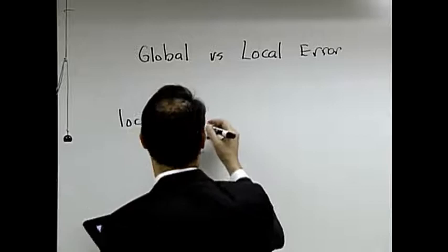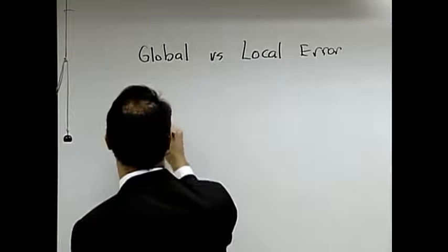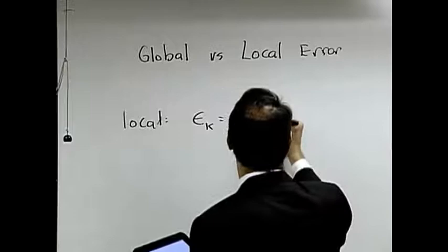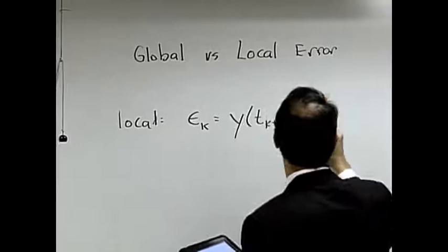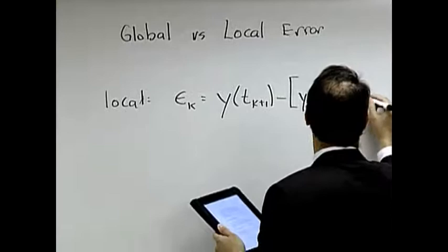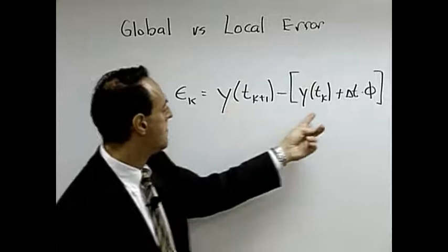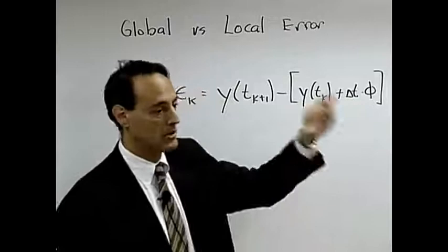And for this, the more general concept of the local error is to say something like this: my local error, let's call it little e in a step, is basically defined by the following. Let me explain this: here is my solution at time k+1, here's my solution at time tk.